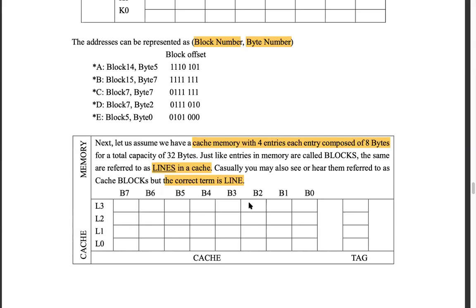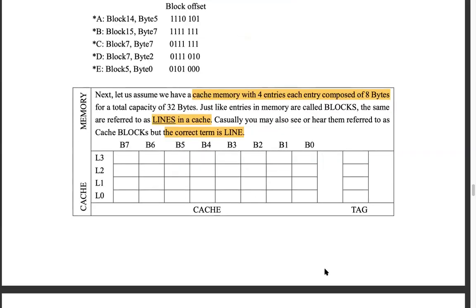Sometimes it's called a cache block or cache line, but the correct terminology is cache line. L0 to L3 — apart from this cache memory, there is a small map called a tag. We will understand why it is there. The cache memory is 8 × 4 and we'll talk about why we need some tag.